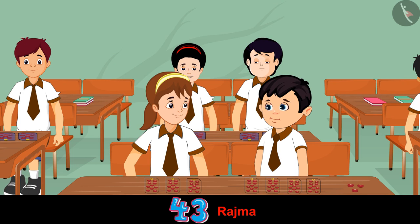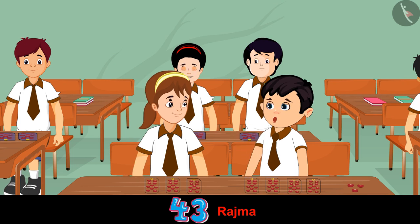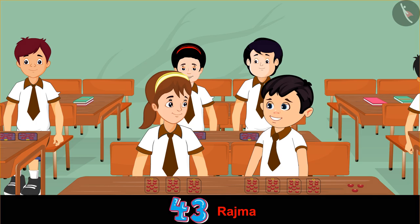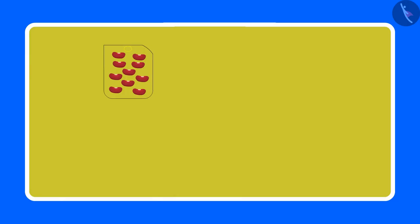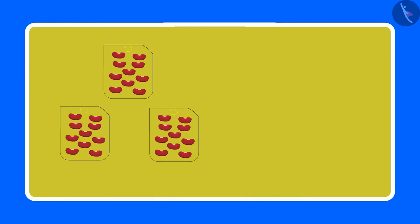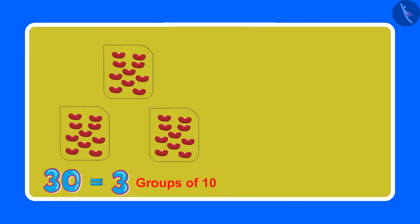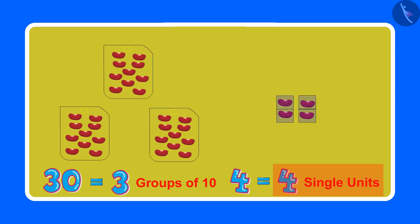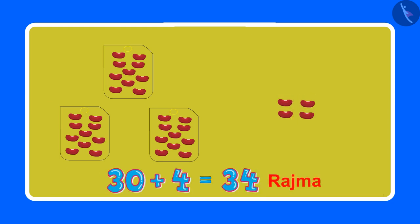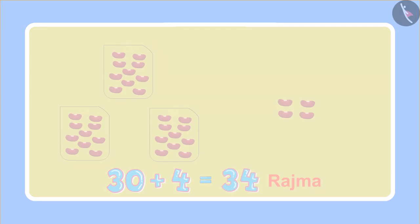Chotu says: No, Aarti, you are not counting it correctly. One packet has 10 beans of rajma and you have made 3 packets like these. So that makes it 30 rajma beans — 3 sets of 10 each — and along with this 4 beans, which means 4 single units. So in total there will be 34 rajma beans.